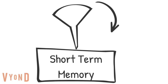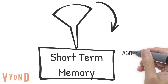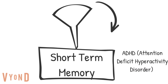Selective attention allows you to ignore noises in the library while you are trying to write a big term paper. People with ADHD, or attention deficit hyperactivity disorder, often have trouble with this filter of selective attention, and the unimportant stuff tends to make it into short-term memory, which makes it difficult for them to concentrate and finish tasks.